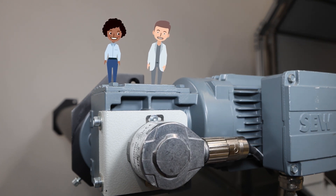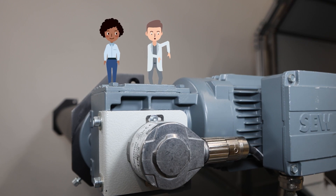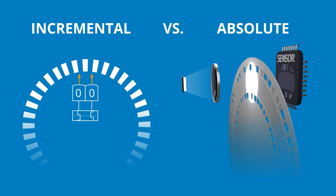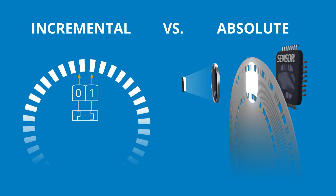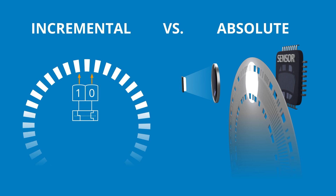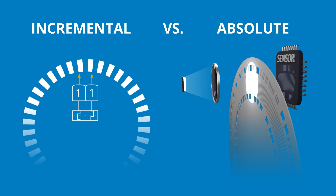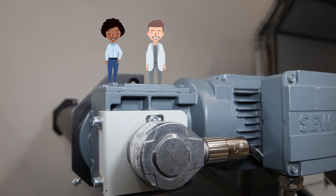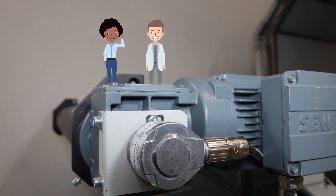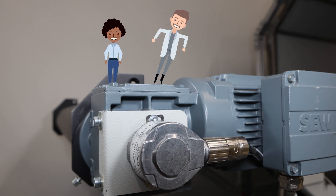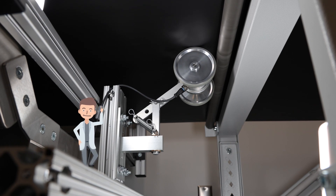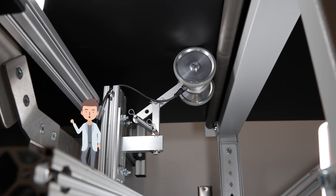That's right! Incremental encoders typically output square wave signals and are often used to determine speed and direction. And absolute encoders provide a unique position value for each shaft location. This means they can always report the exact position, even after a power cycle. Each type has its own specialty and has lots of options for their mechanical design and electrical output, so they can measure different things.